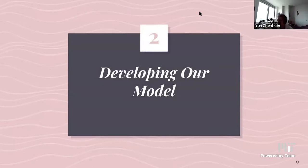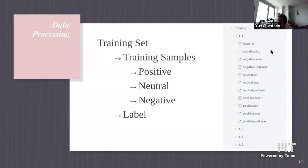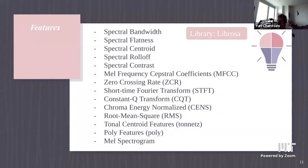Next, we start developing a model. The first step is to process our data. In each sample there were three audio clips — positive, negative, and neutral — corresponding to the different questions each person answered. We iterated through each file, extracting features from the audio clips.